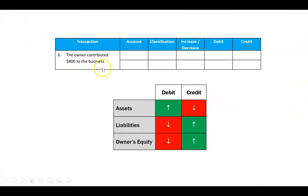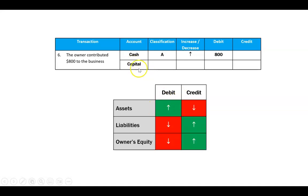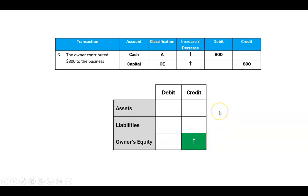One more for now: the owner contributed $800 to the business. From the business's perspective, it's got more cash — cash is an asset, it's increasing, so that means that's a debit. When you give the business capital, that's a ledger called capital — owner's equity — and it's increasing. The rule says that should be a credit. That's just six example transactions.